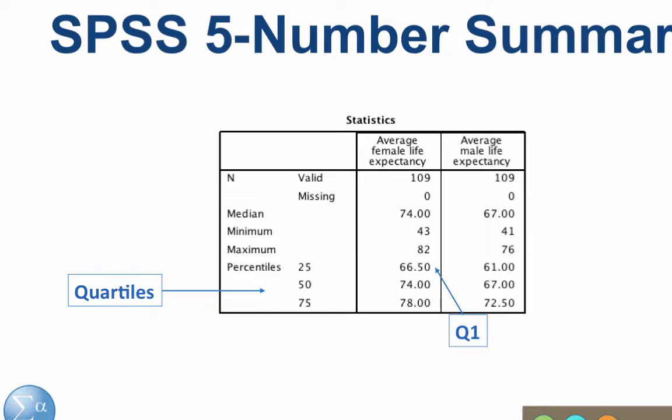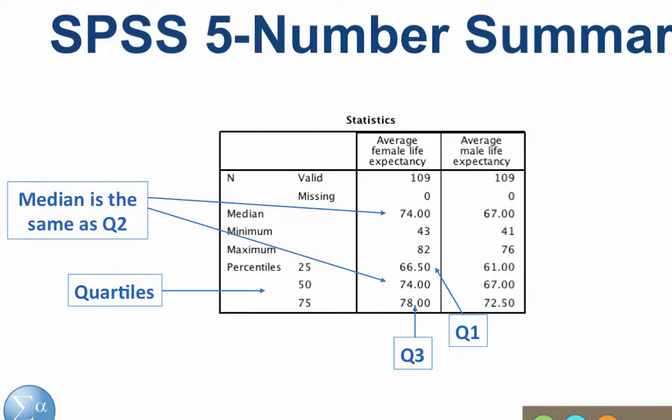The 25th percentile is the same as the first quartile. The 75th percentile is the third quartile. So continuing with our five number summary, the minimum is 43, the first quartile is 66.5, and the median is 74. Notice that the median is the same as the second quartile. The third quartile is 78, and the maximum is 82.